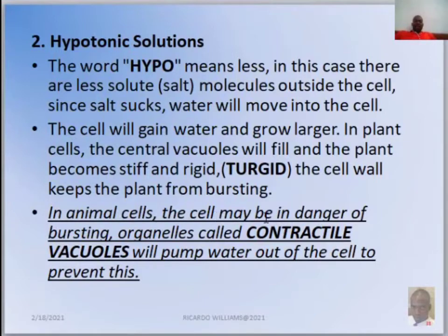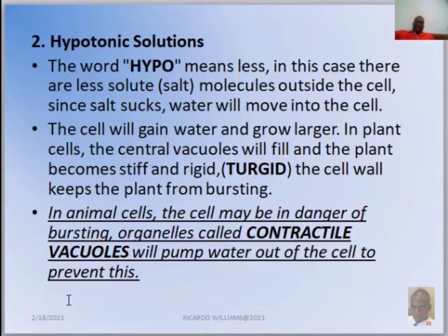In animal cells, the cell may be in danger of actually bursting. Organelles called contractile vacuoles will pump water out of the cell to prevent this. These are found in organisms that live in aquatic environments, allowing them to maintain balance because they are living in a watery environment. So a hypotonic solution has less solute outside than inside the cell, and water moves toward the higher solute concentration.